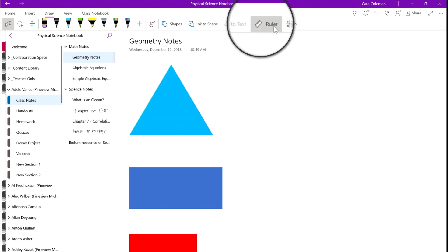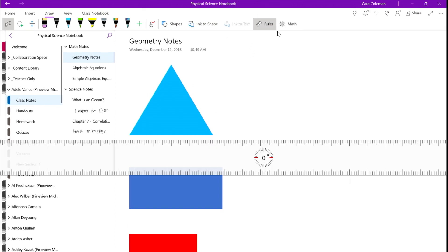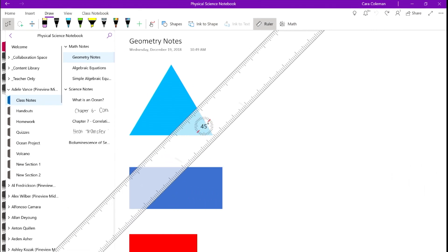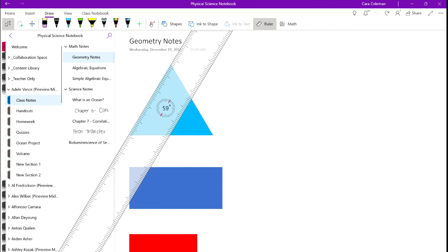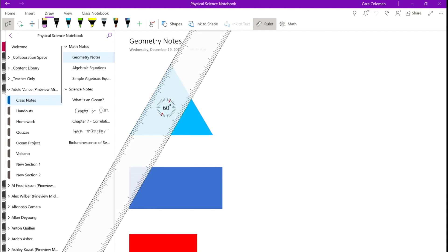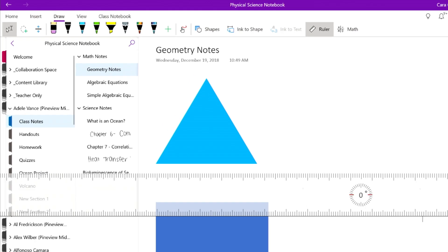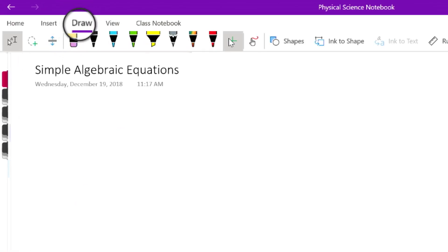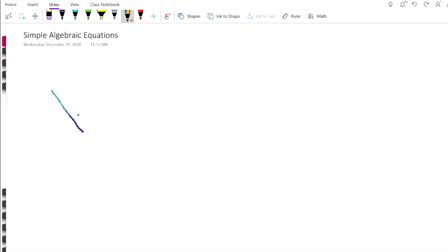We'll check out the ruler feature in OneNote first. You can find it located in the draw tab. With this, students can quickly measure an image on their notebook page or draw a straight line with ease. Now, click the draw button to draw using a pen or your own finger.